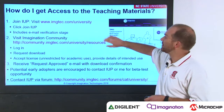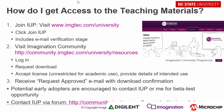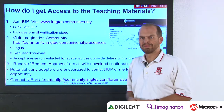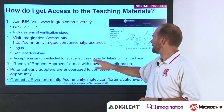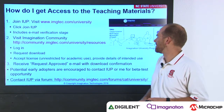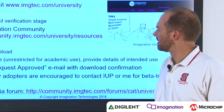How can you get access to these teaching materials? First, join the Imagination University Program at imgtech.com/university and click on 'Join IUP.' There's an email verification stage, so you'll be sent an email which you'll have to click on. Then you can visit the Imagination community, log in, and request the download for the materials and accept the license. The license for this material is quite flexible — if you're using it for academic purposes, it's unrestricted and you can do anything you want with it. You will need to provide details of your intended use, and then you'll receive a request-approved email with a download confirmation. We already have this course being taught at at least two universities and we look forward to hearing from you.